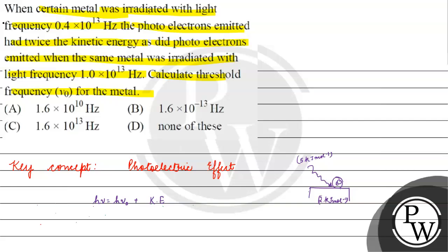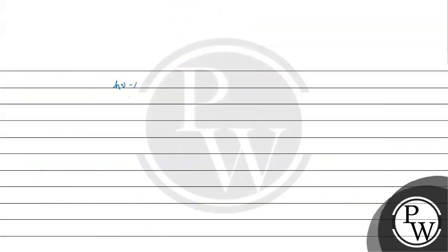Now, what do we have in our question? Kinetic energy 1 equals twice of kinetic energy 2. So, H×μ₁ − H×μ₀ = 2×(H×μ₂ − H×μ₀). This gives us: H×μ₁ − H×μ₀ = 2H×μ₂ − 2H×μ₀. Here μ₁ is the frequency in the first case and μ₂ is the frequency in the second case.